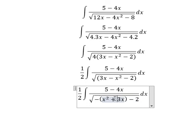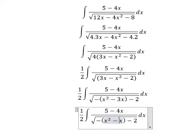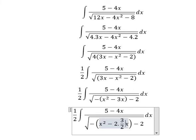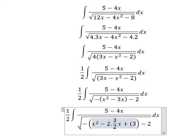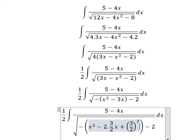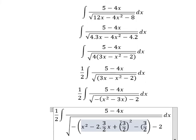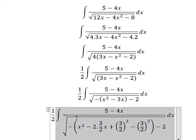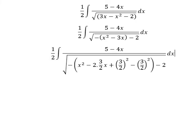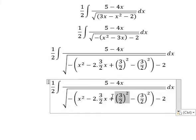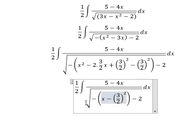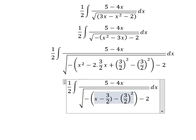This is negative, so next, number 3 we will change into number 2 multiplied by 3 over 2. We need to add 3 over 2 squared, then minus 3 over 2 squared. Next, this one we change into an identity, so we have x minus 3 over 2 to the power of 2.